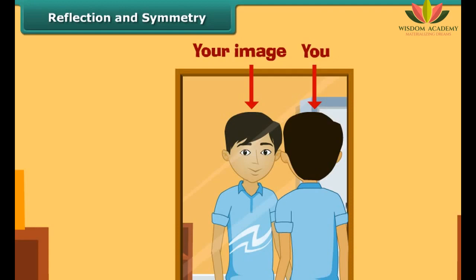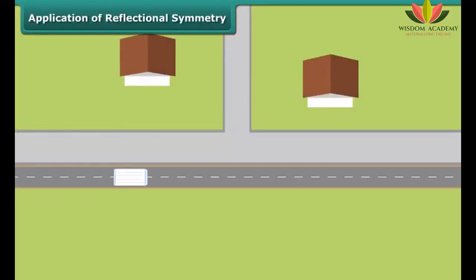Students, you must have noticed that when you see yourself in front of a mirror, you and your image are identical. The image is the reflection of the object in the same line. Notice that there is no change in the lengths and angles.